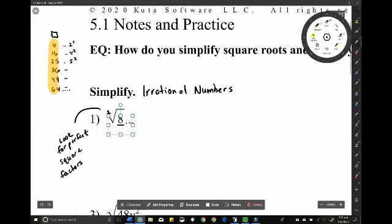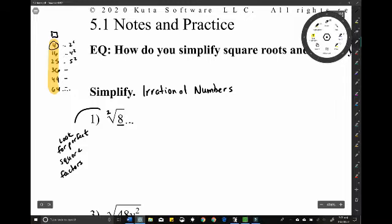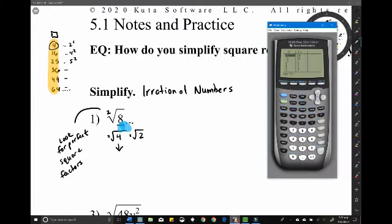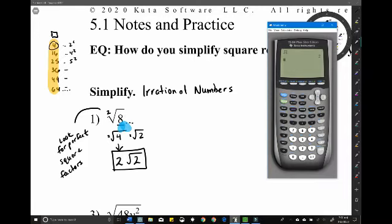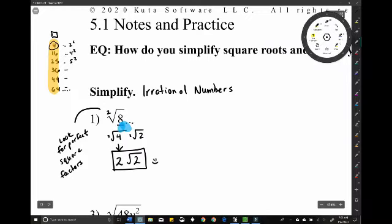What's the biggest perfect square that goes into 8? The biggest one is 4. We can think of this as the square root of 4 times the square root of 2. Then the square root of 4, that's our perfect square, just becomes 2. So this is 2 square roots of 2, and that's how you would write your simplified answer. If you ever want to check your work, the square root of 8 and 2 square roots of 2 will give you the same answer, but we do like this version more.